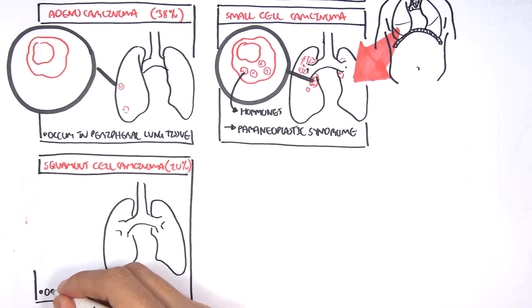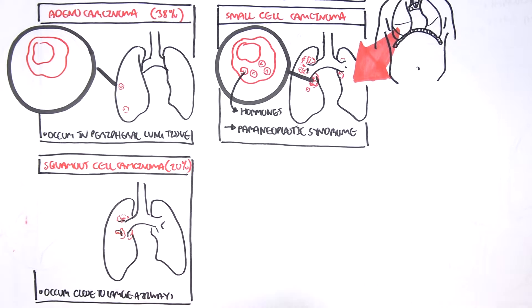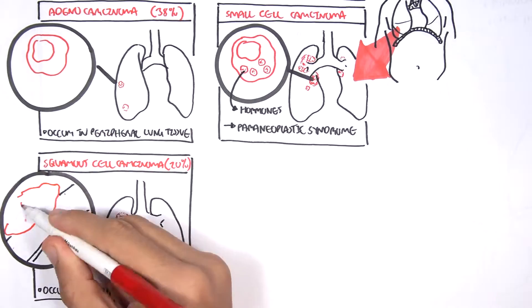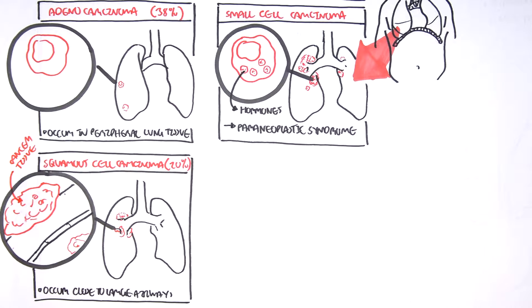These types of cancers tend to occur close to the main bronchus and can cause obstruction of the airways. They are called squamous because the epithelial cells that line the airway become mutated and change from columnar, cuboidal, to squamous, and essentially dysplasia cancer.